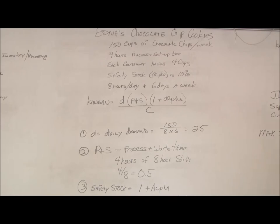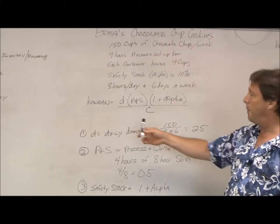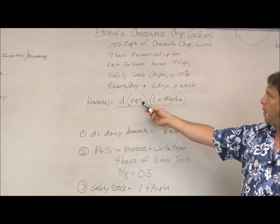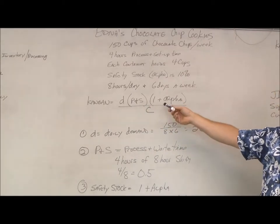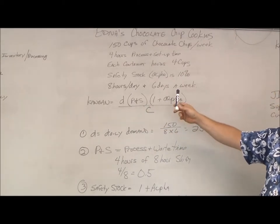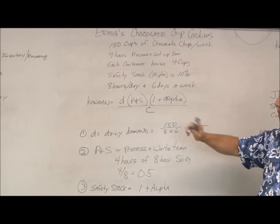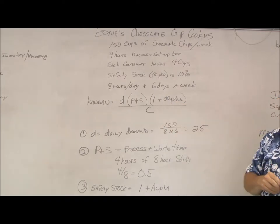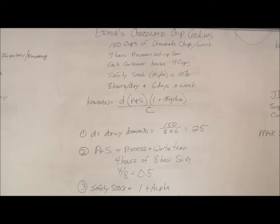So the basic Kanban formula is your demand times your process and setup time, one plus alpha - or one plus your safety stock - divided by the container size.